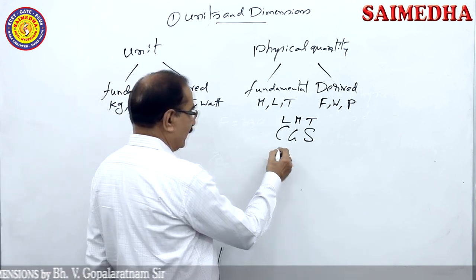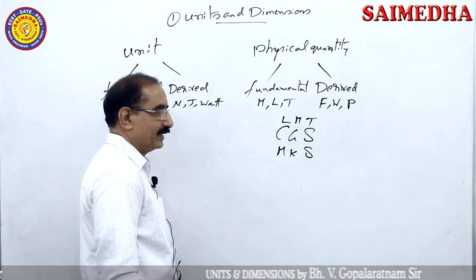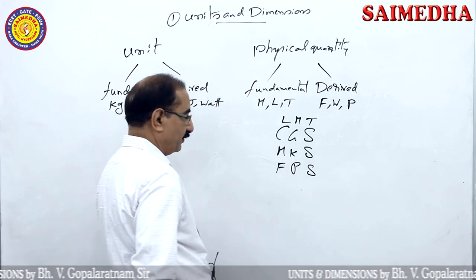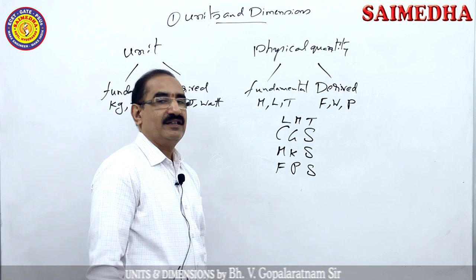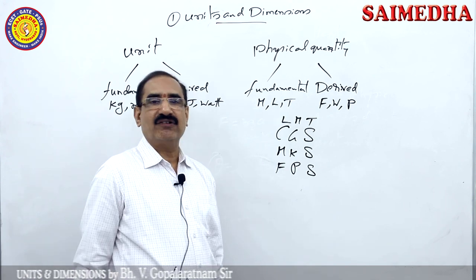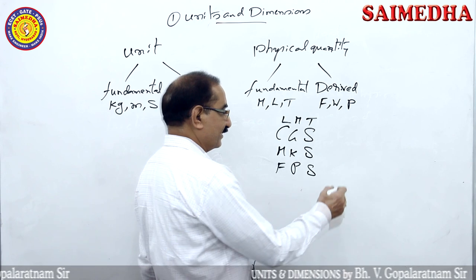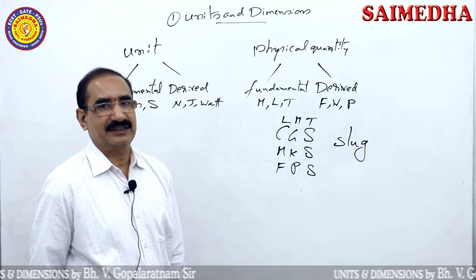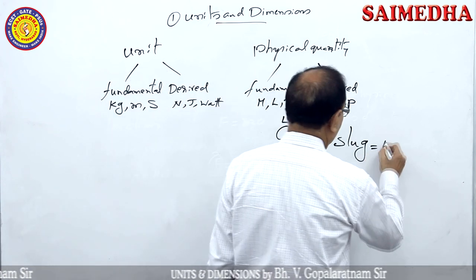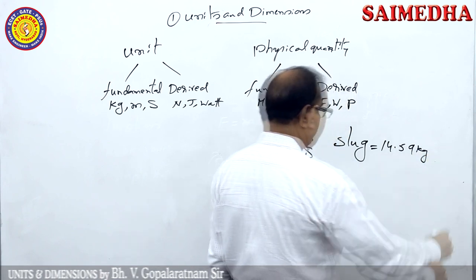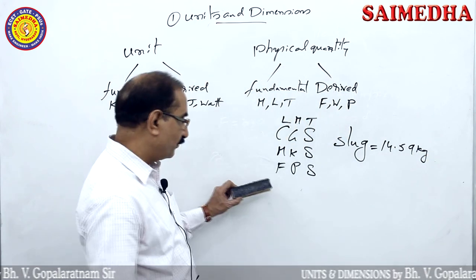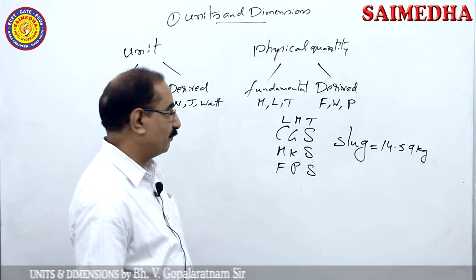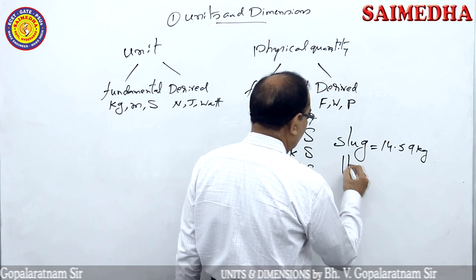The second system is MKS — meter, kilogram, second. The third is FPS — foot, pound, second. In British engineering, mass is taken as slug. One slug is 14.59 kilograms. Pound is the unit of mass in the FPS system, denoted by LB. One pound is 453.6 grams.